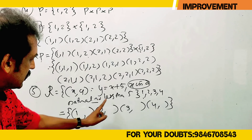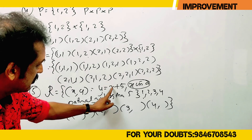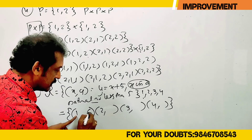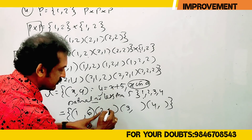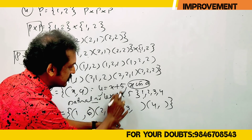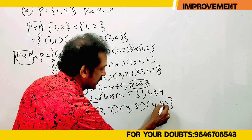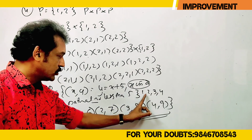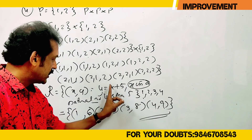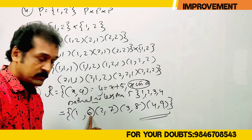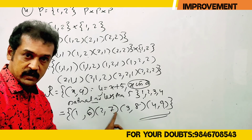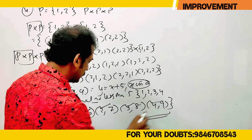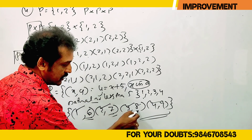We will use x values and y. y is equal to x plus 5. When x is 1, y equals 1 plus 5 equals 6. When x is 2, y equals 7. When x is 3, y equals 8. When x is 4, y equals 9. So domain is {1, 2, 3, 4} and range is {6, 7, 8, 9}.